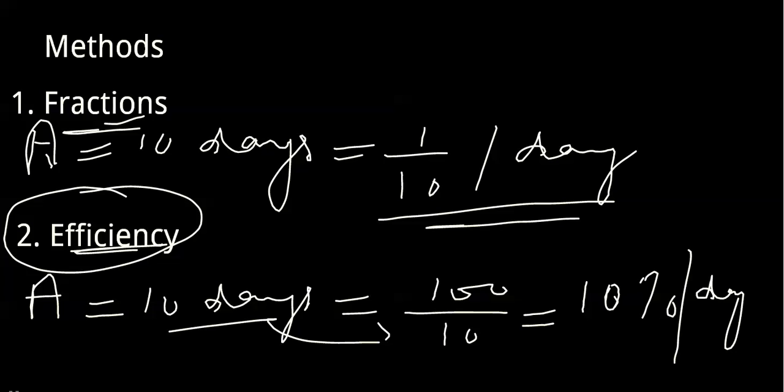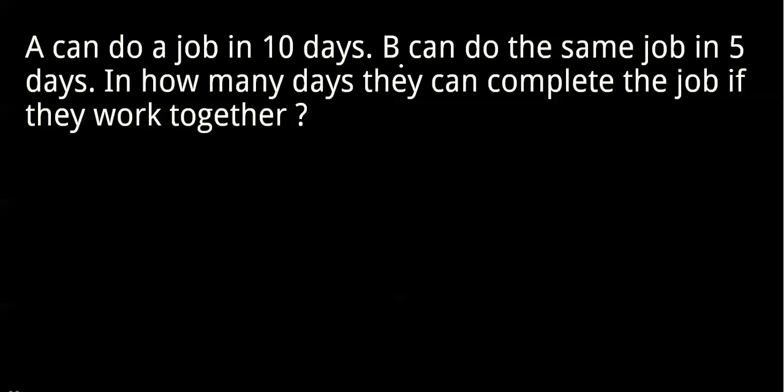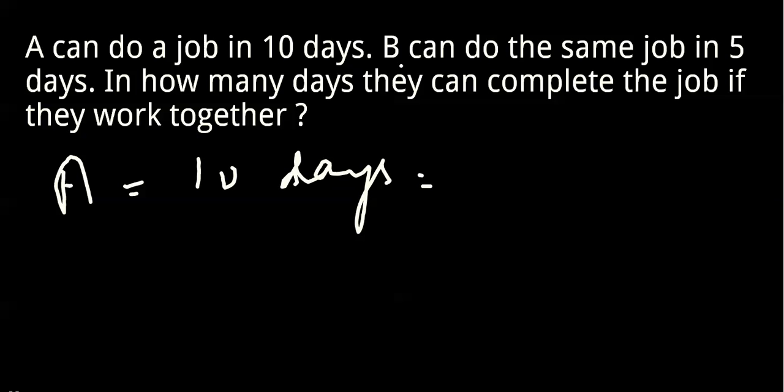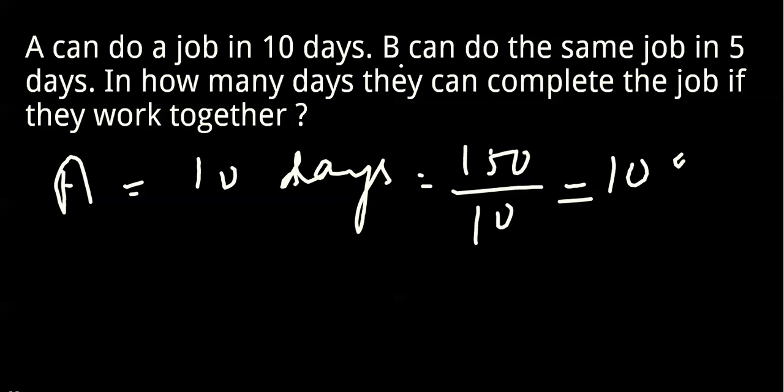Question: A can do a job in 10 days, B can do the same job in 5 days. In how many days can they complete the job if they work together? This is the most common first question in every quantitative aptitude book. A's efficiency is 100 divided by 10, which equals 10%.